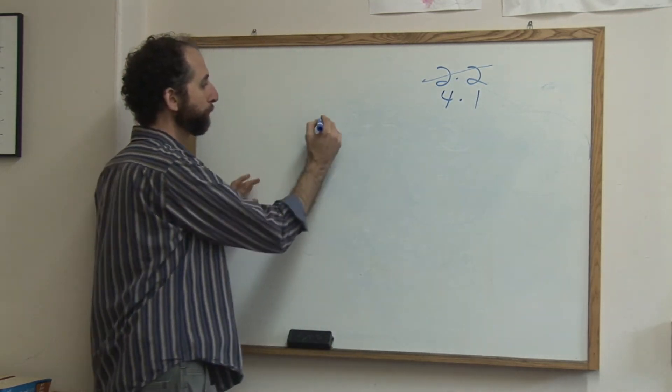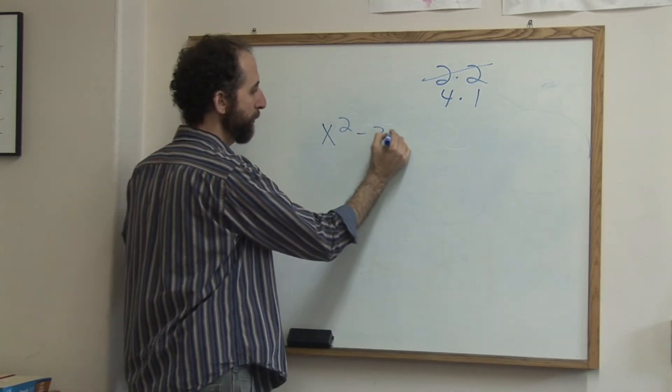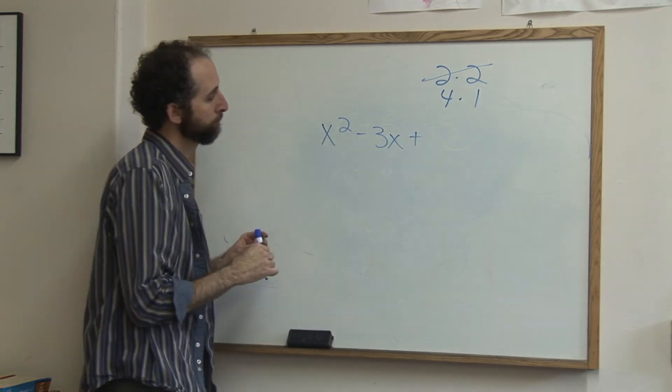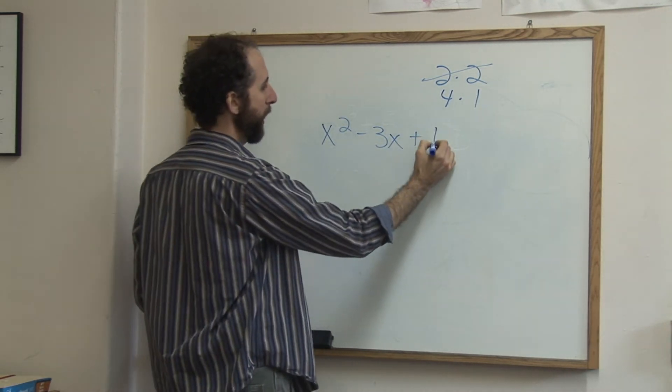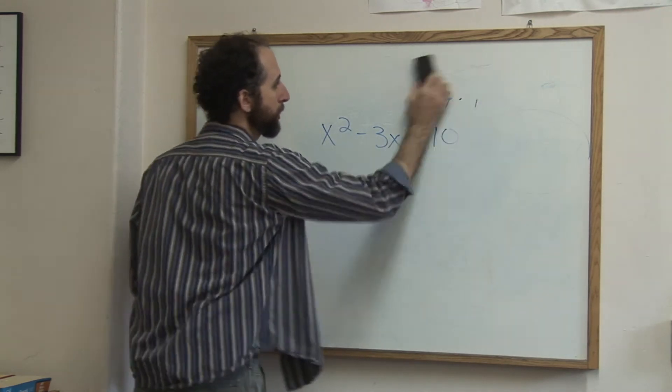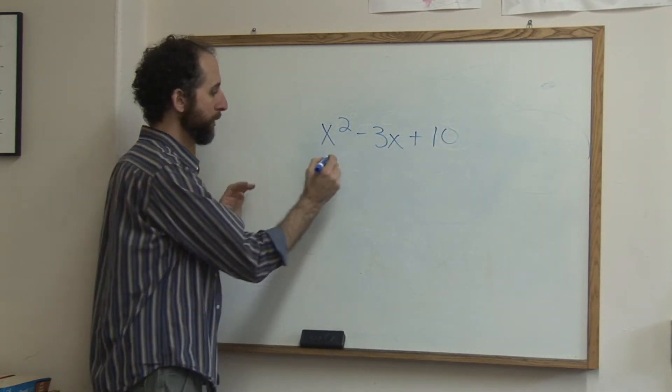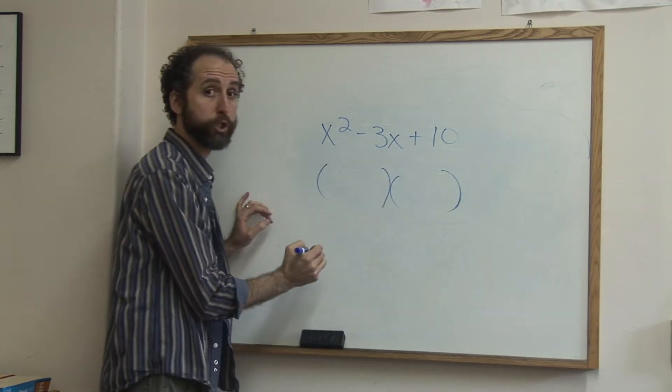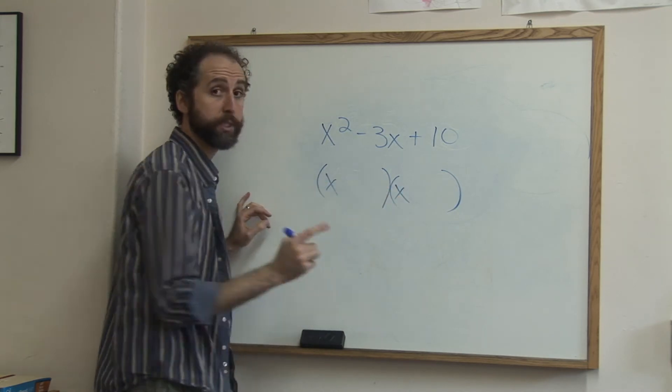Let's say we had x squared minus 3x plus, let's see, 10, okay? So remember, step 1, draw the parentheses. Step 2, put the x and x. Step 3, what two numbers multiply to be 10?